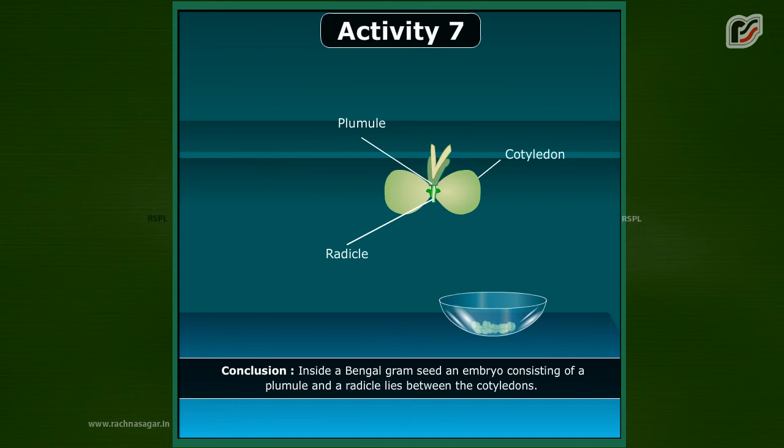Conclusion: Inside a Bengal gram seed, an embryo consisting of a plumule and a radicle lies between the cotyledons.